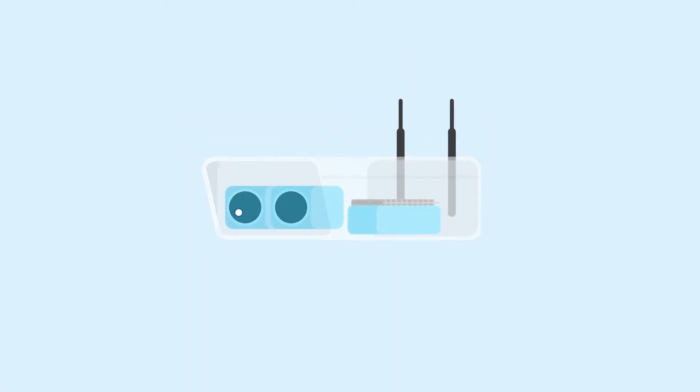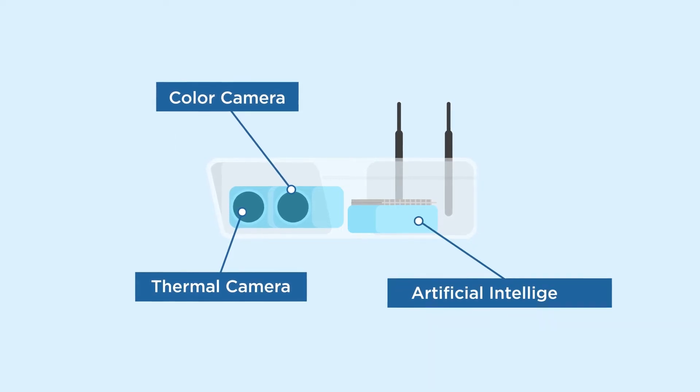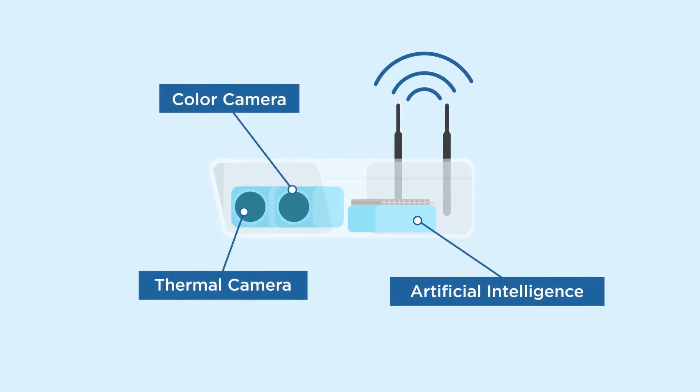The DCAM is industrial grade and consists of a thermal imager, a color video camera and advanced artificial intelligence for continuous autonomous monitoring.